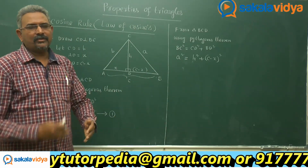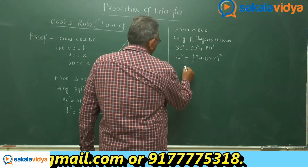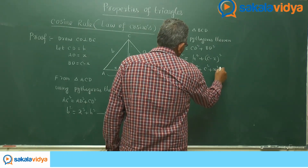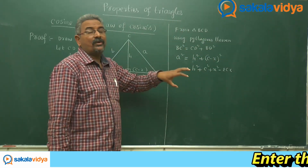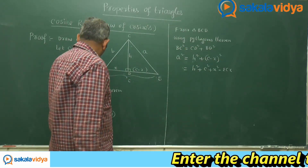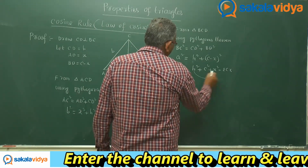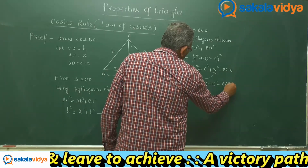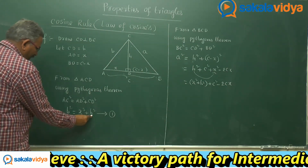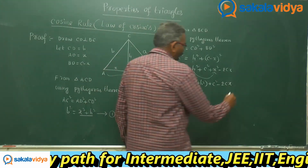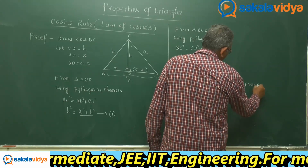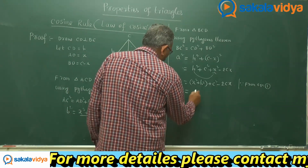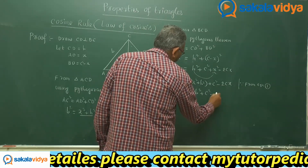Let us simplify to get the value of a². Expanding (c − x)²: a² = h² + c² + x² − 2cx. Rearranging: a² = x² + h² + c² − 2cx. From equation 1, x² + h² = b². So replacing, we get a² = b² + c² − 2cx.